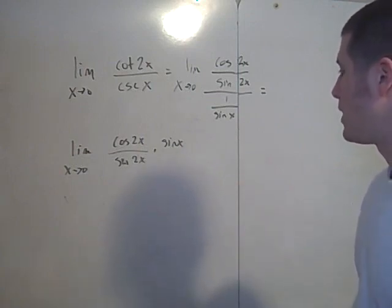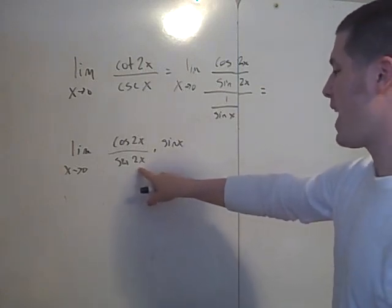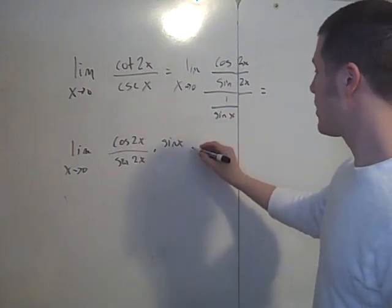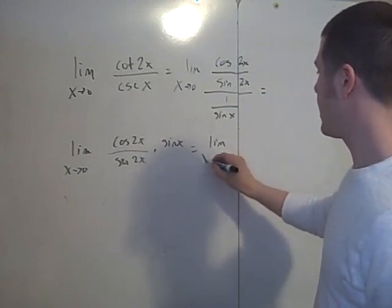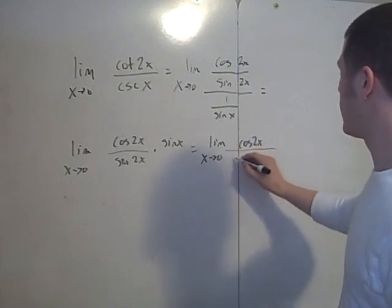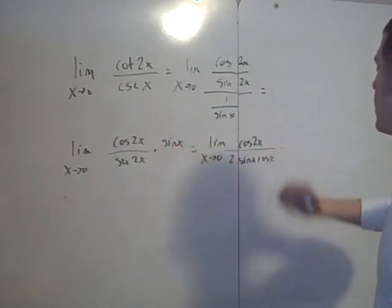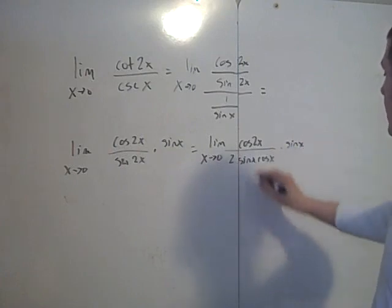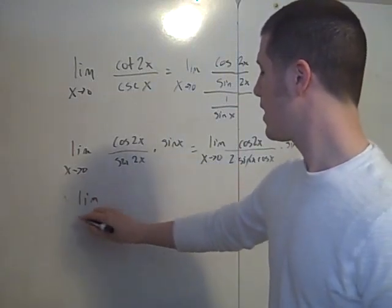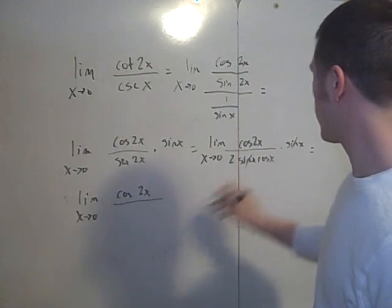Now we use another trigonometric identity for the denominator: sine 2x equals 2 sine x cosine x. So this becomes the limit as x goes to 0 of cosine 2x over 2 times sine x times cosine x times sine x. The sine x cancels, leaving the limit as x goes to 0 of cosine 2x over 2 cosine x.